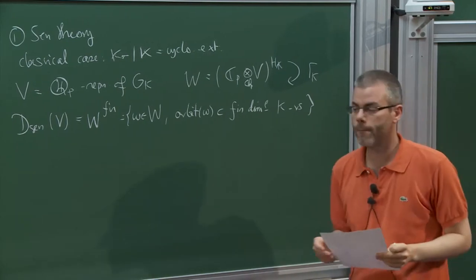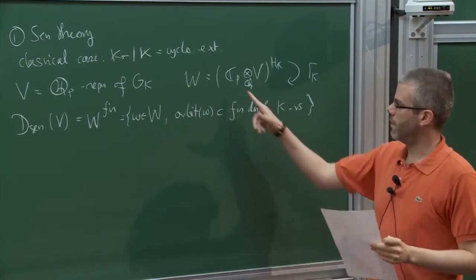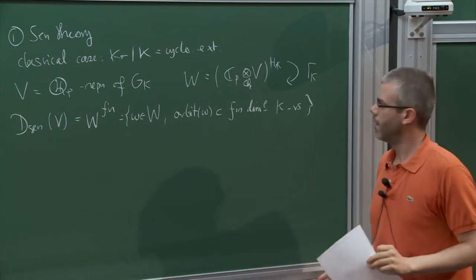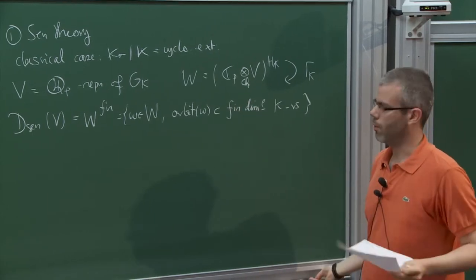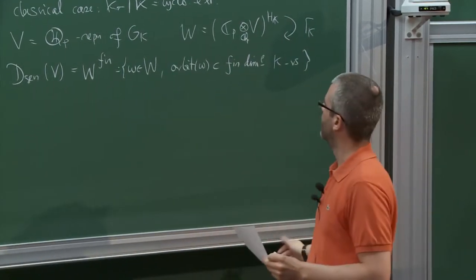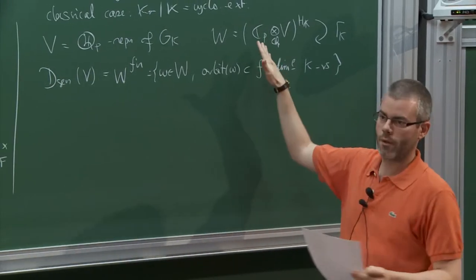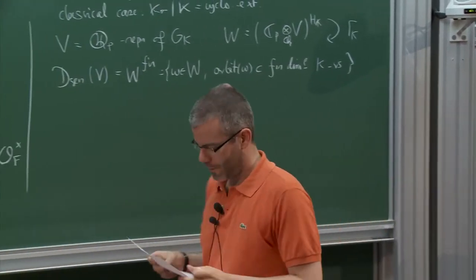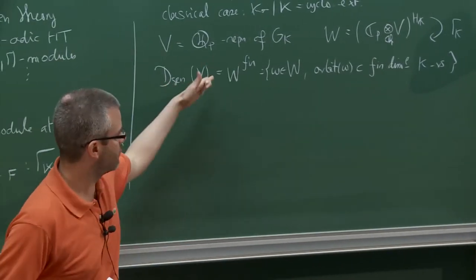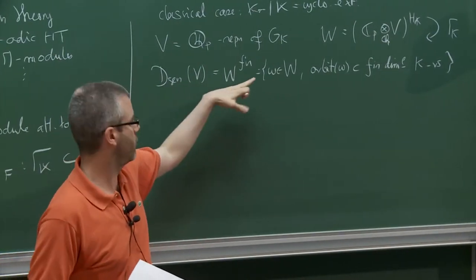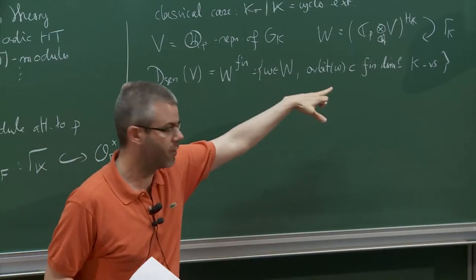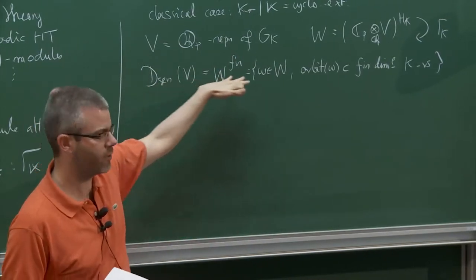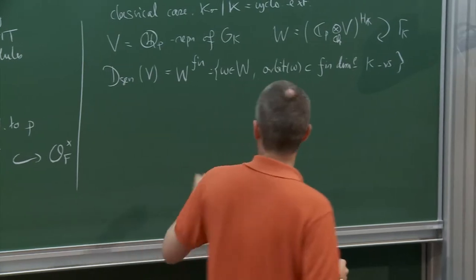One should use C_p and not Q_p-bar here — this is the completion of Q_p-bar, otherwise probably all vectors would be finite. This is a very restrictive condition; there is no reason why a random vector would be finite, so no reason why this space would be different from zero. The only thing you can see a priori is that this is a K_∞-vector space.